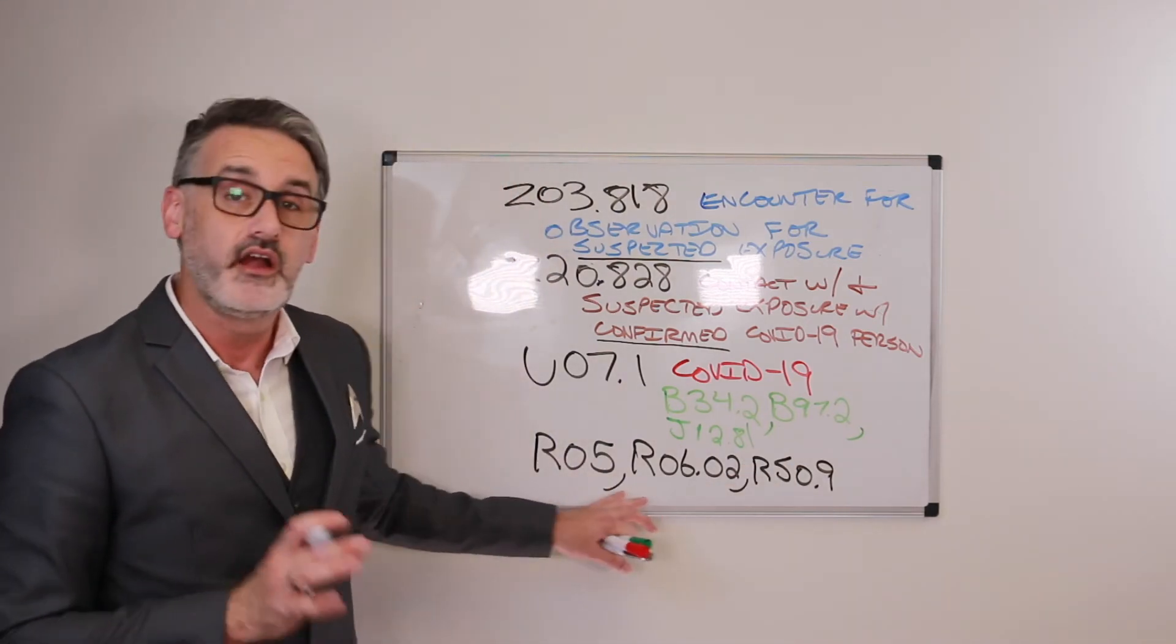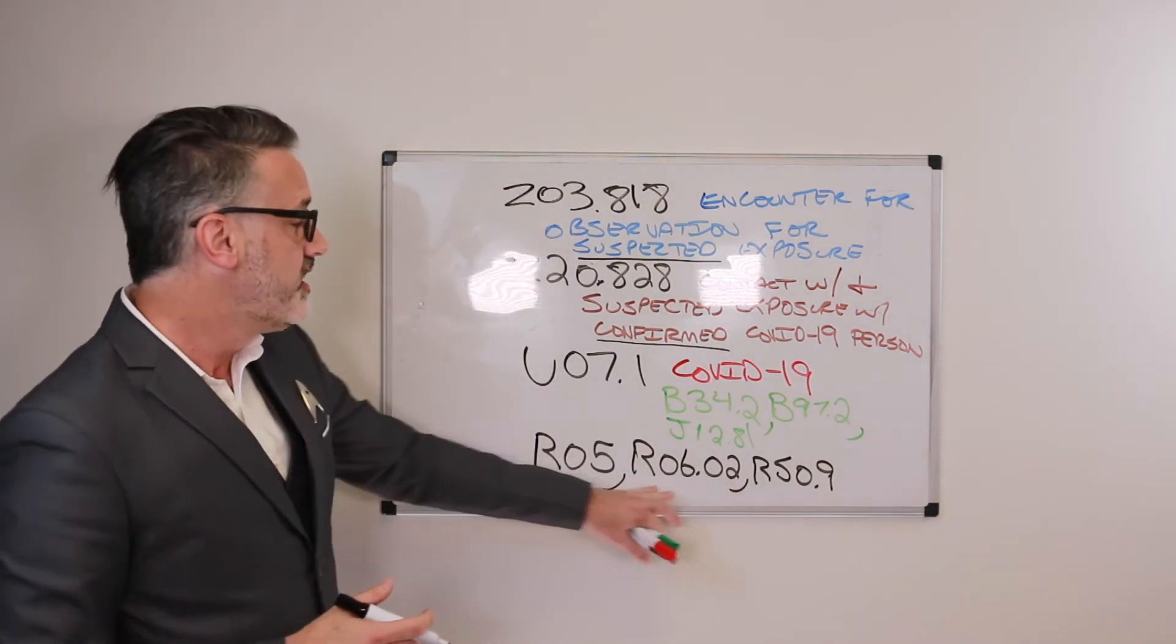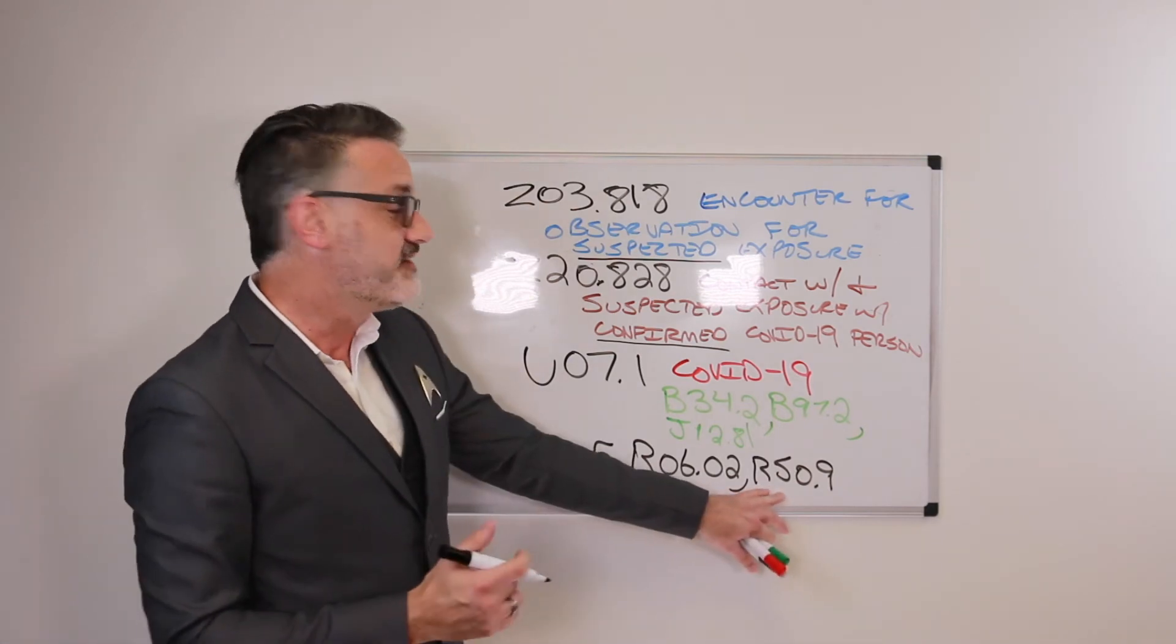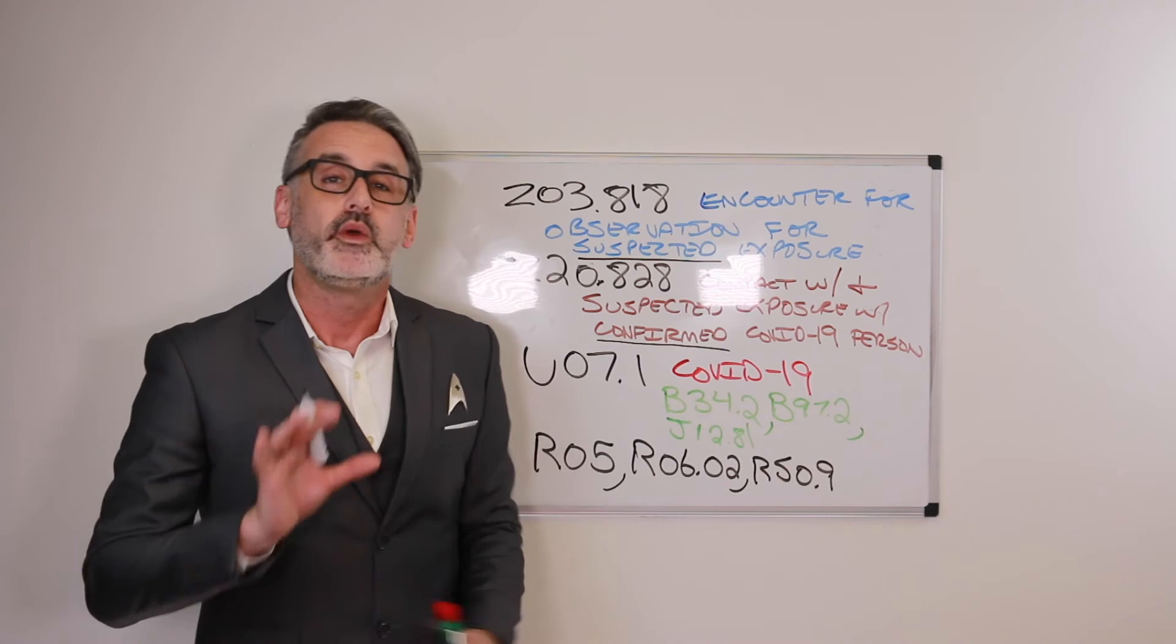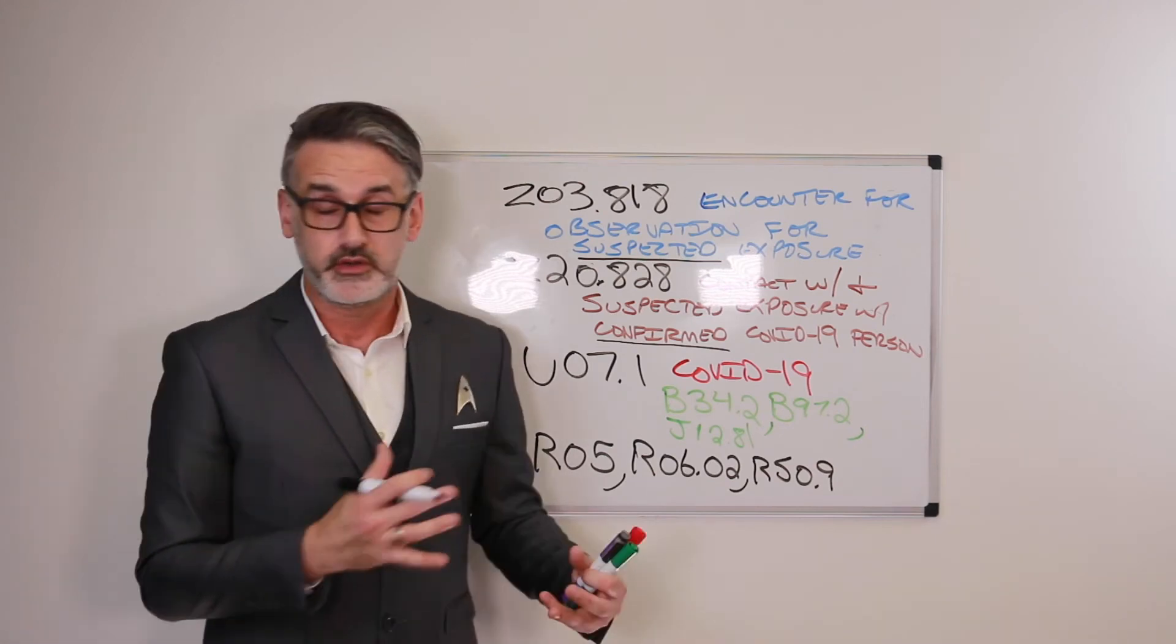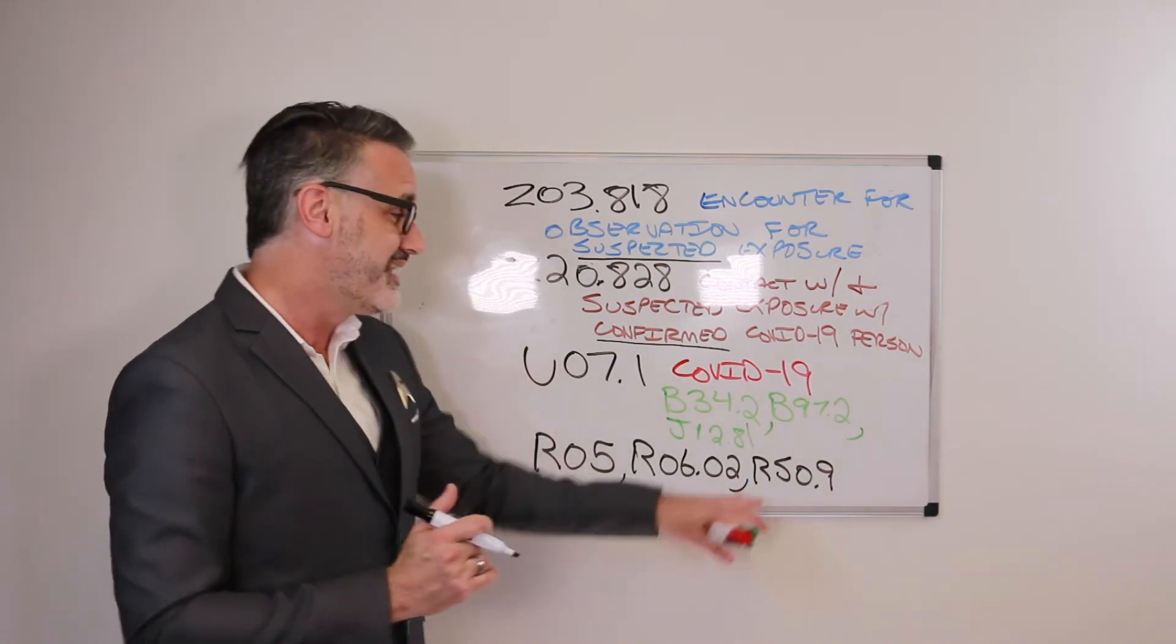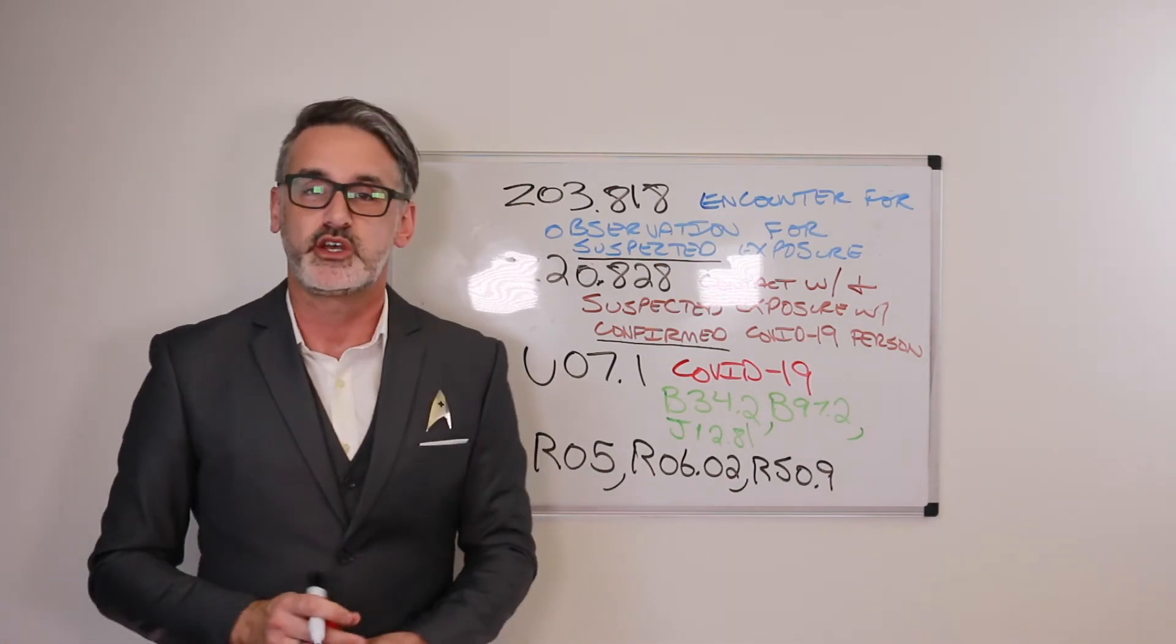So again, these three codes here, R05 for cough, R06.02 for shortness of breath, and R50.9 for fever, we would only code any combination or just any one of those codes if a patient has negative COVID-19 results but has any of those conditions. We would use those codes instead.